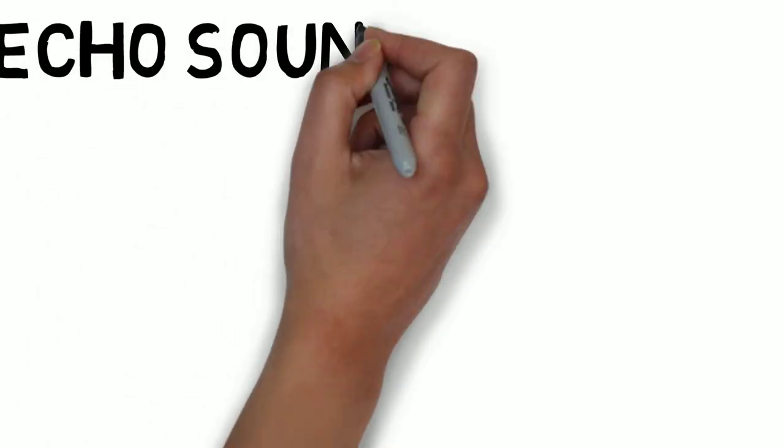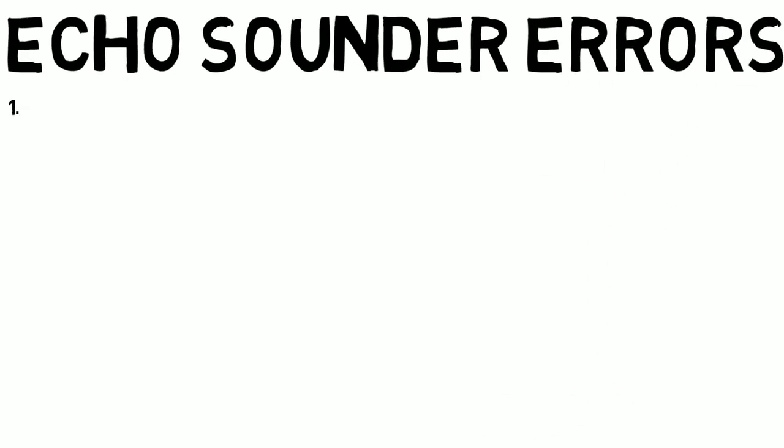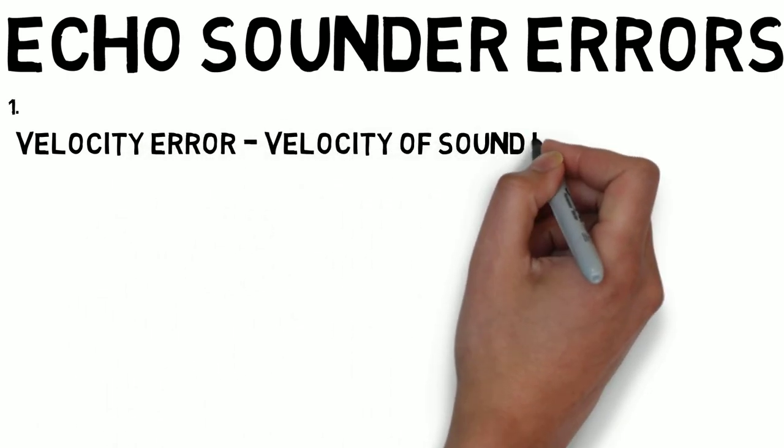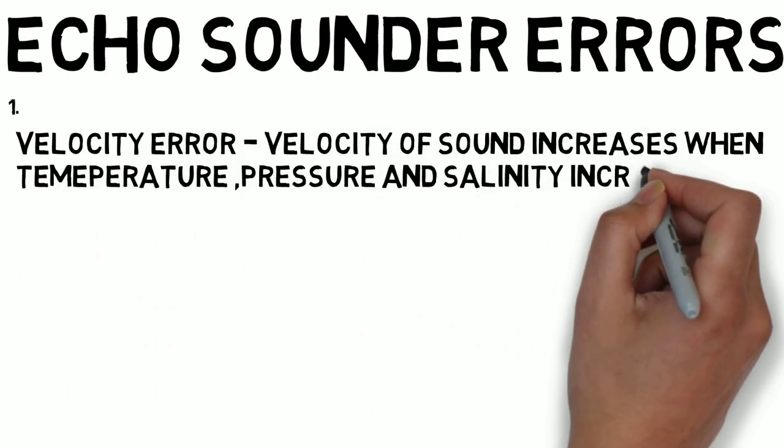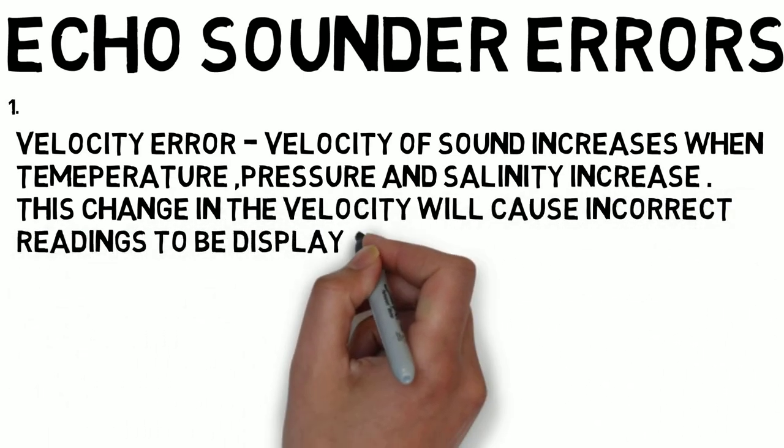The first one is the velocity error. The velocity of sound increases when the temperature, pressure, and salinity increases. This change in the velocity will cause incorrect readings to be displayed.